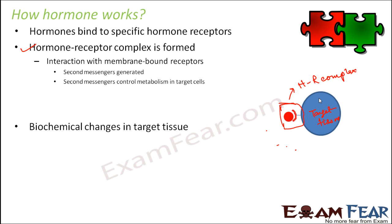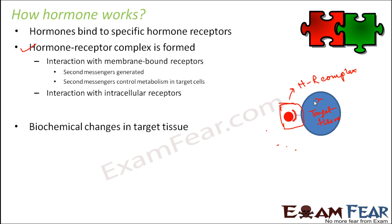The hormone itself does not enter inside the cell, but it creates second messengers which control the metabolism in the cells. Now what if the receptors are intracellular? In that case, the hormone has no choice — it has to enter inside. If the receptor itself is present inside, then the hormone cannot bind to the target tissue outside. So in the case of intracellular receptors, the hormone will enter the target cell and the hormone-receptor complex will be formed inside the target cell.